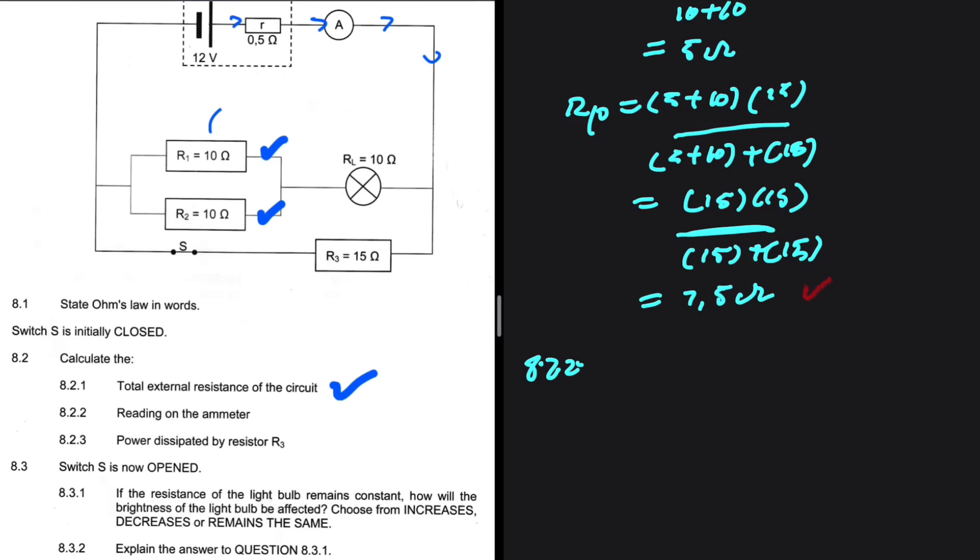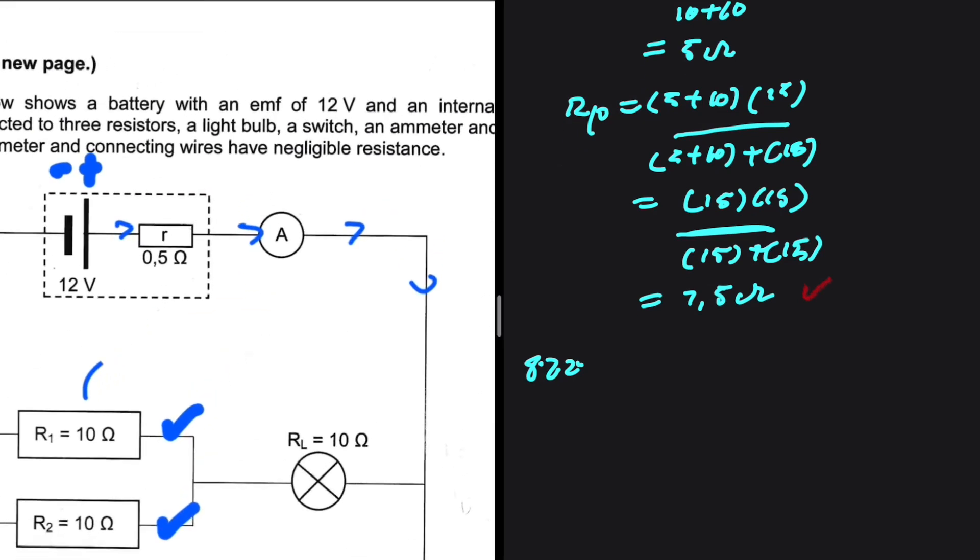In 8.2.2, we want the reading on the ammeter. As you can clearly see, the ammeter is experiencing current that is not divided. So basically we're looking for I total.